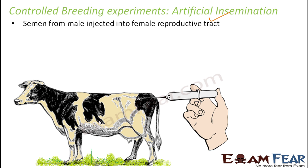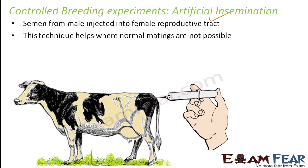Whereas in the case of artificial techniques, it is all under your control. Whenever you want, you can just inject the semen into the female reproductive tract. This technique helps when normal matings are not possible. The semen taken out from the male's body can also be stored for some time or transported to another area where bulls are not available. So artificial insemination can be of extreme help.